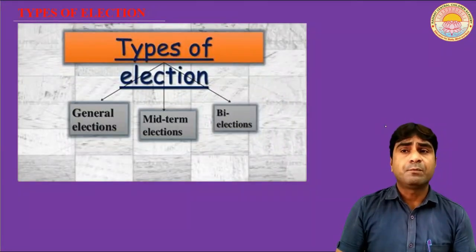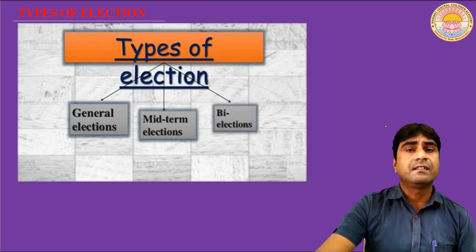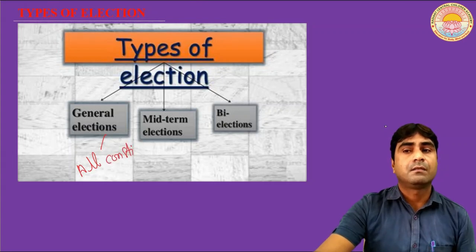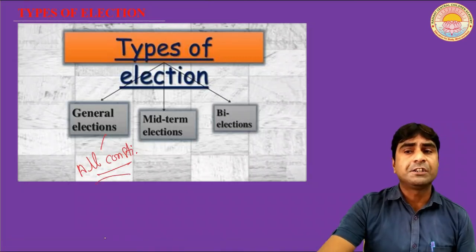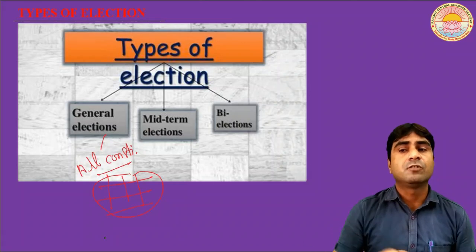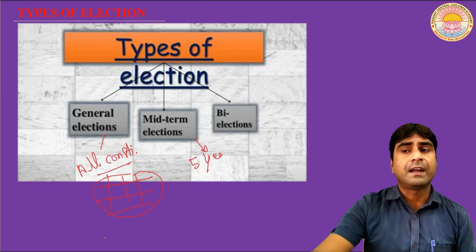Next, we have to talk about the types of election. Elections are of three types. First, the general election means elections held in all constituencies — for example, in a state assembly election, when the election is held in all constituencies across the whole state, this is known as the general election. Second, the mid-term election: in India the term of the election is five years, but if the government is dismissed due to any reason, an election held before completing the five years is called a mid-term election.